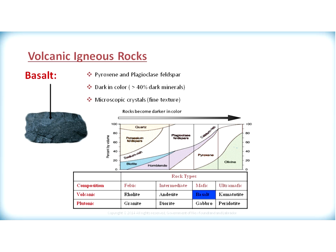Looking at the mafic field on the composition chart, the mafic field is found more to the right side. Basalt will contain a high percentage of calcium-rich plagioclase feldspar, a smaller percentage of hornblende, a higher percentage of pyroxene, and a moderate percentage of olivine. It should be noted that the rock gabbro also contains the same minerals, but forms in a plutonic environment beneath the Earth's surface. Therefore, gabbro would have the exact same mineral composition, but you would be able to see its minerals with the naked eye.